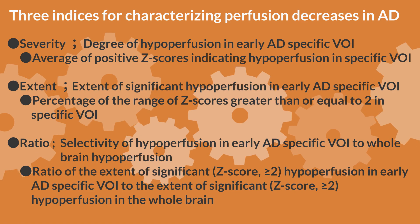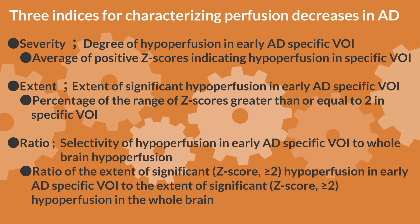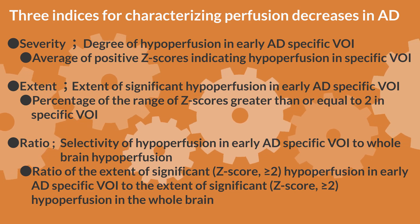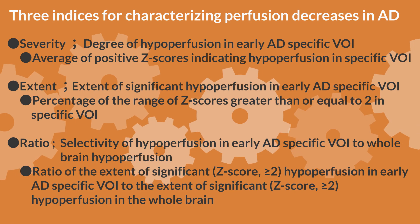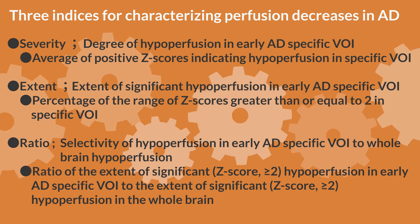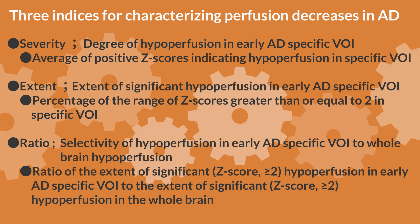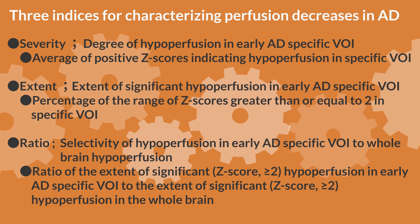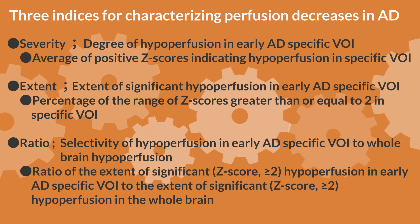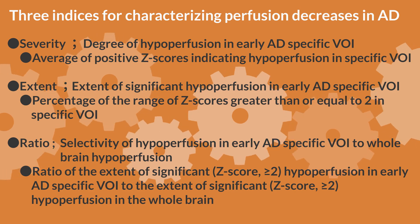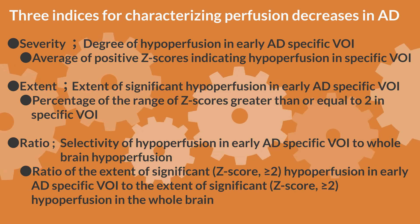The EZI quantifies the perfusion decrease in the volume of interest (VOI) as three indices. Severity is the average of positive Z-scores in the specific VOI, indicating the degree of perfusion reduction. Extent is the percentage of the range of Z-scores ≥2 in the specific VOI, indicating the extent of significant perfusion reduction. Ratio is the ratio of the extent of significant perfusion reduction in the specific VOI for early Alzheimer's disease to the extent of significant perfusion reduction in the whole brain, indicating the selectivity of specific perfusion reduction.